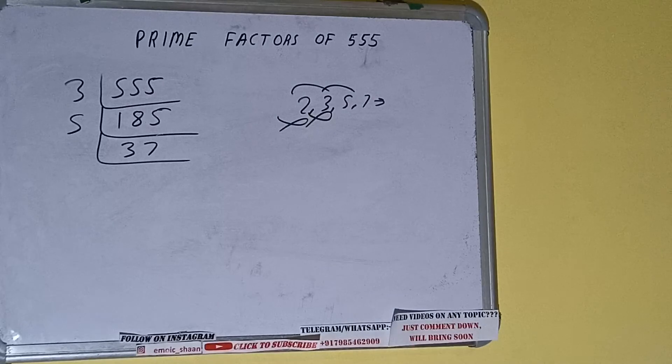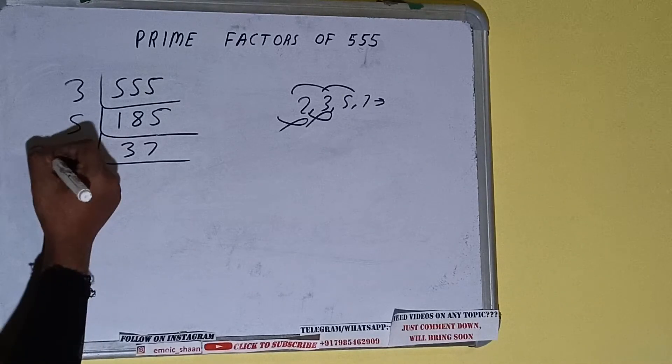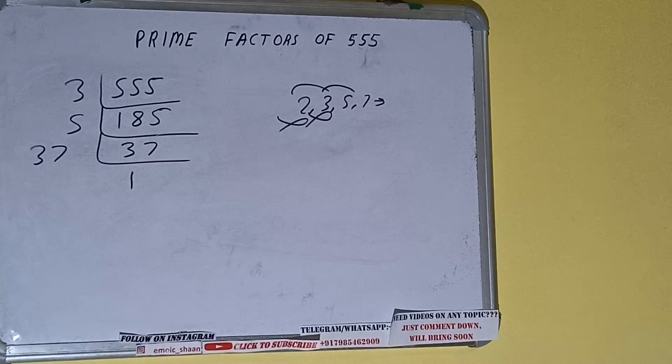We have 37, and 37 is not divisible by 5. 37 is also a prime number, so it is only divisible by itself. Dividing 37 by 37, we get 1.